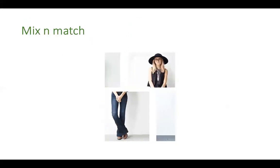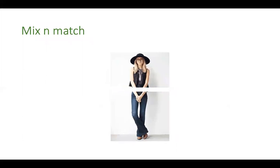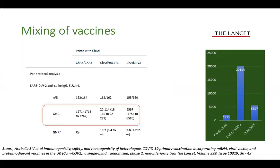What about mix and match? Heterologous boosting is better. Most of us have taken Covishield - so which vaccine to mix and match with? In this study, they compared homologous boosting with Covishield versus boosting with an mRNA vaccine or with a subunit vaccine (Novavax). The antibody titer was far higher when boosting happened with an mRNA vaccine. Even after Novavax, the antibody titer was far higher compared to homologous Covishield booster.